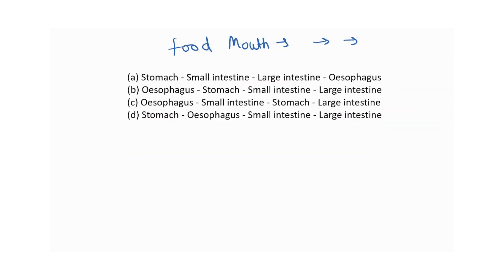Based on everything we have studied so far, there is a quiz. This is to check your own knowledge. A pathway has been given with four options. You need to choose which option correctly describes how food passes from the mouth through the various organs of the body. Please pause the video and think about which of the four options is correct. I hope this was helpful — thanks for watching.